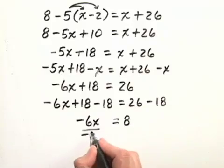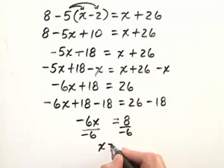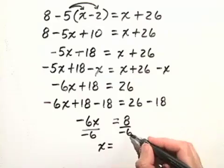Finally, we divide both sides by negative 6, and we get x equals 8 divided by negative 6.